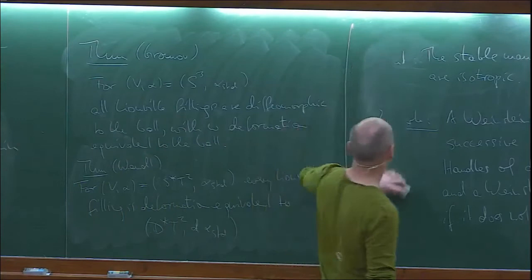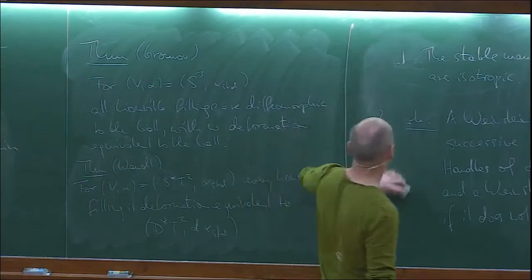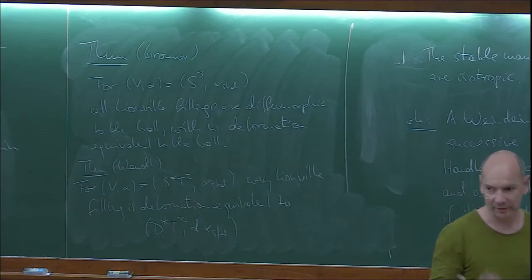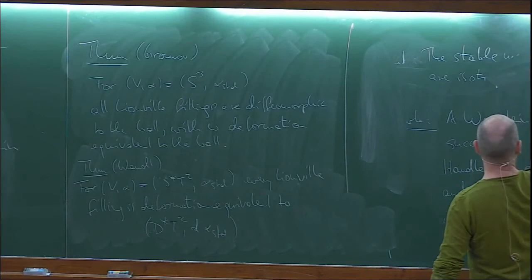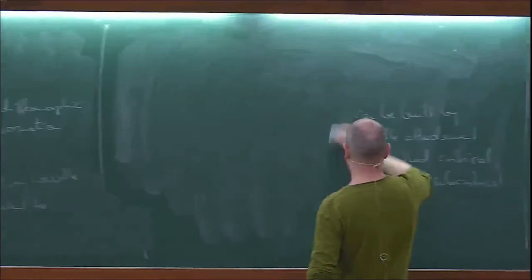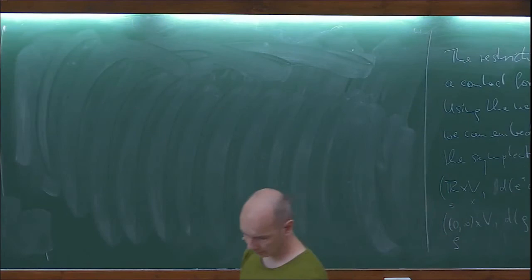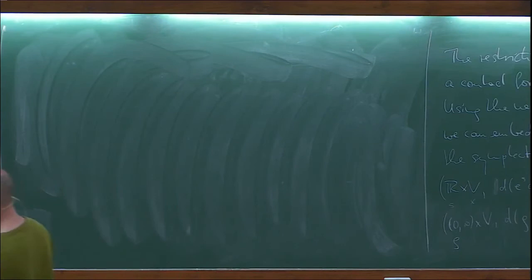I didn't aim for completeness; I just wanted to give hints of what type of results are known. If you start with an overtwisted contact manifold — and we now know what this means in all dimensions — then they don't have any fillings at all. So in particular they don't have these kinds of Liouville fillings. Any V that appears as the boundary of a Liouville domain is automatically tight.